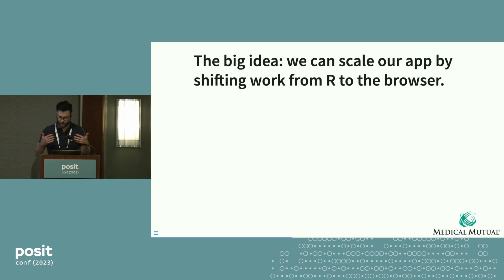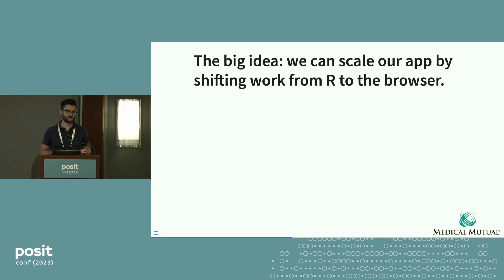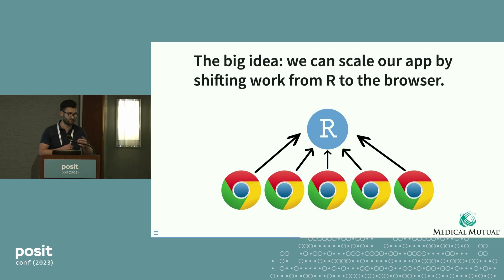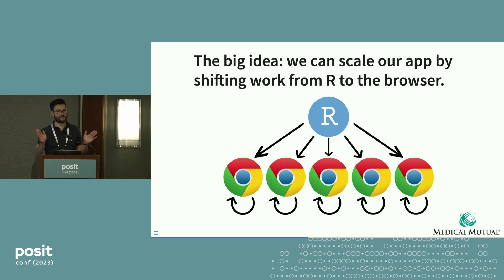The big idea here is that we can scale our Shiny applications by taking work from the R process and moving it into the browser. Instead of all browsers hitting that R process at the same time asking for plots, we're going to have R take the dataset to be plotted and kick it out to every connecting browser. From there, the browser becomes responsible for regenerating the plots as you update those dropdowns — it's all happening within those individual browsers.